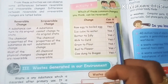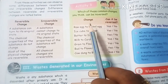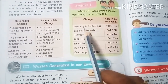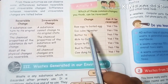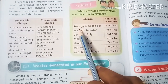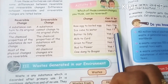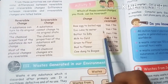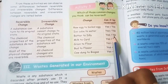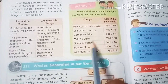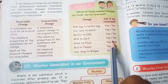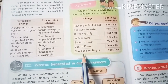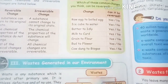Activity 3: Which of these common changes can be reversed? Raw egg to boiled egg — No, irreversible. Ice cube to water — Yes, reversible. Batter to idli — No, irreversible. Milk to curd — No, curd cannot become milk again, irreversible. Grain to flour — No, irreversible. Cow dung to biogas — No, irreversible.